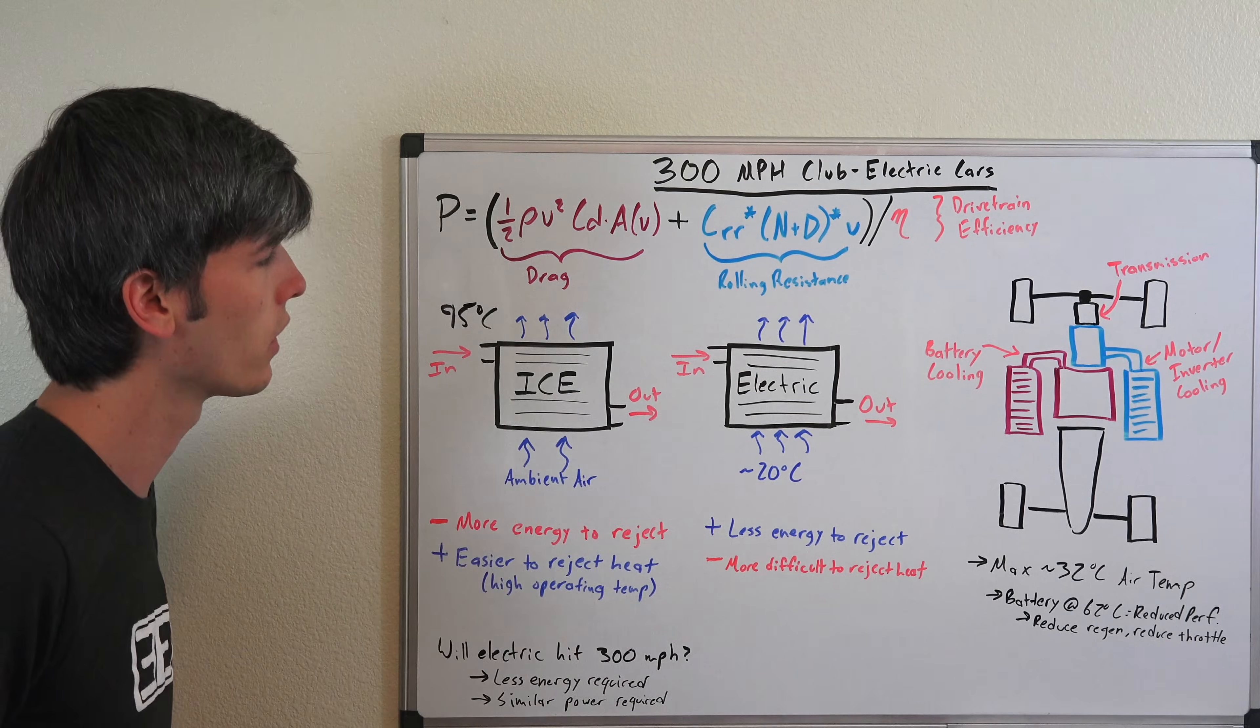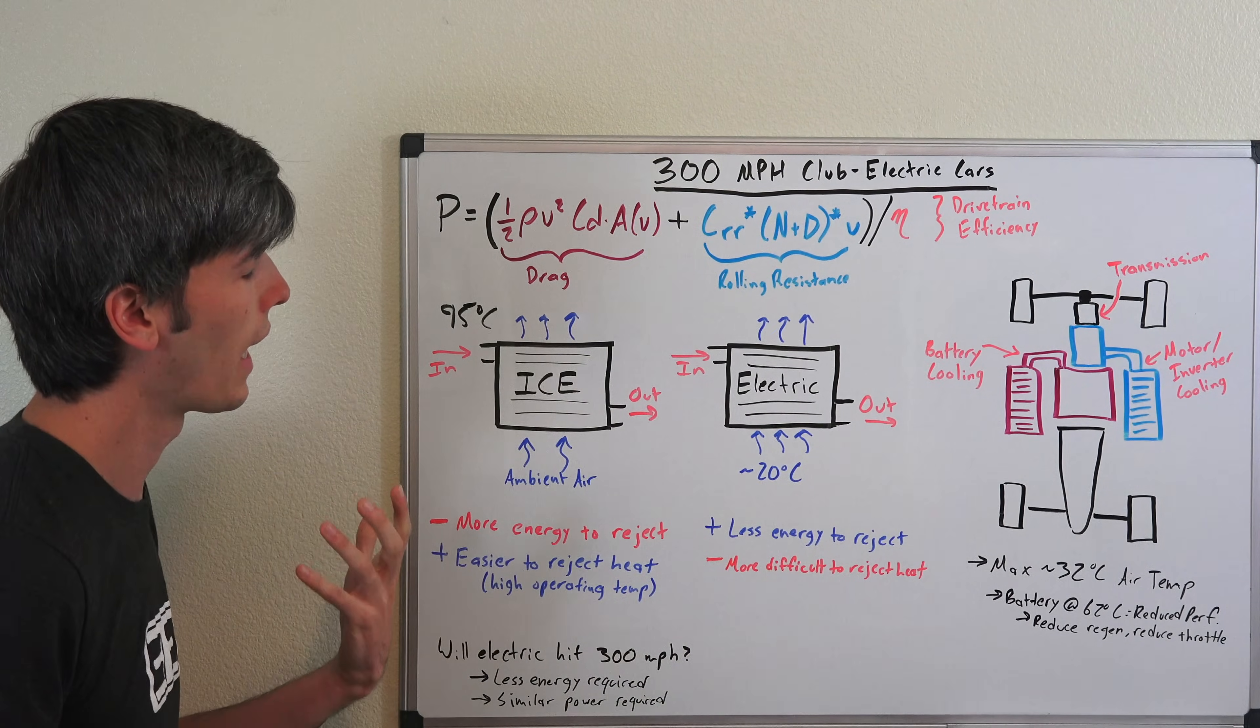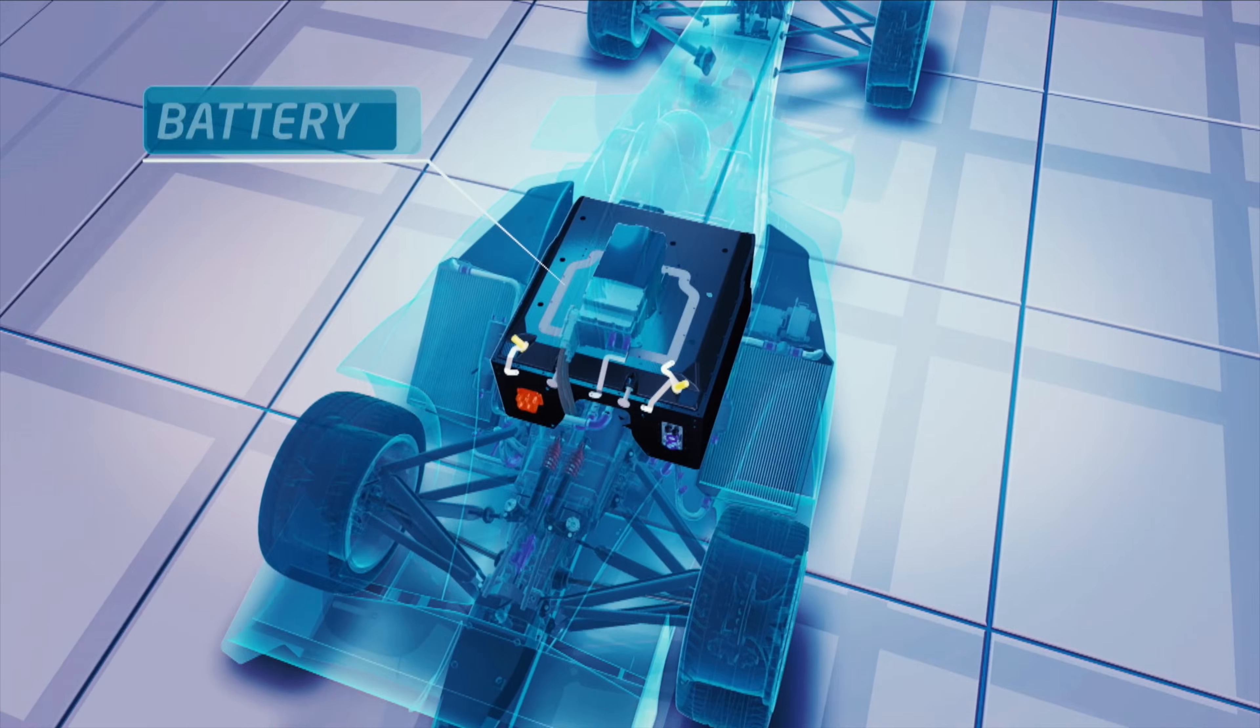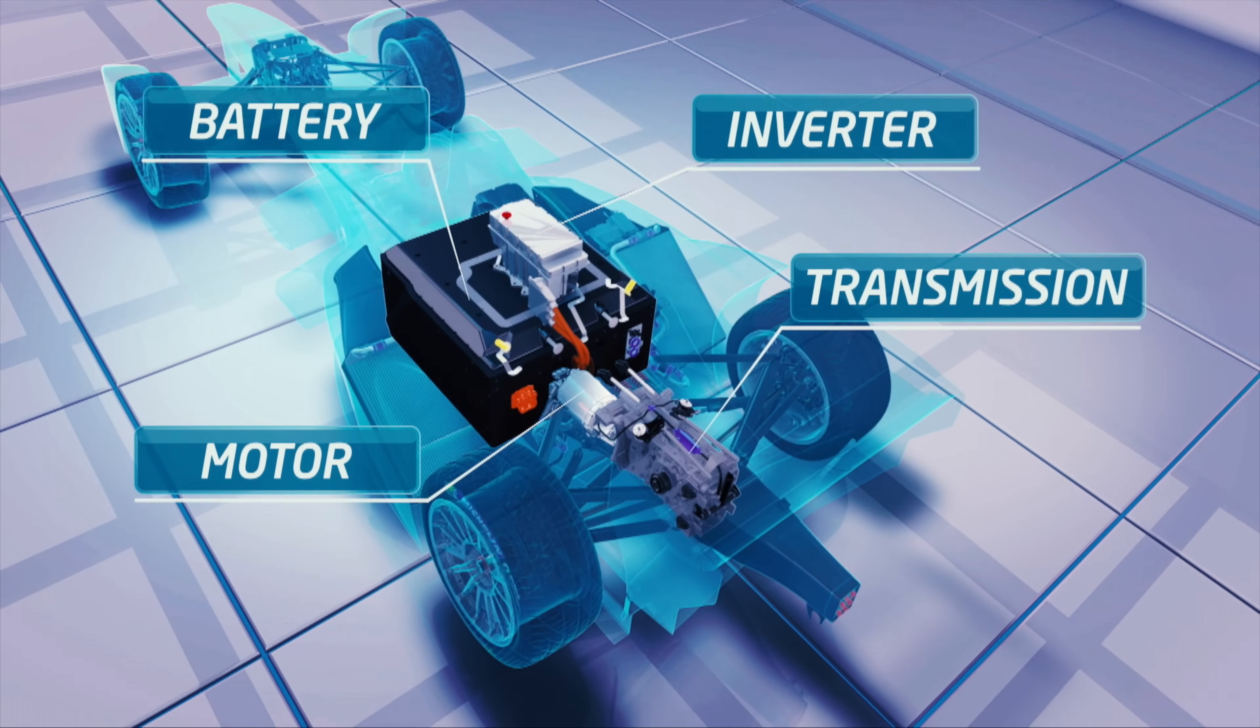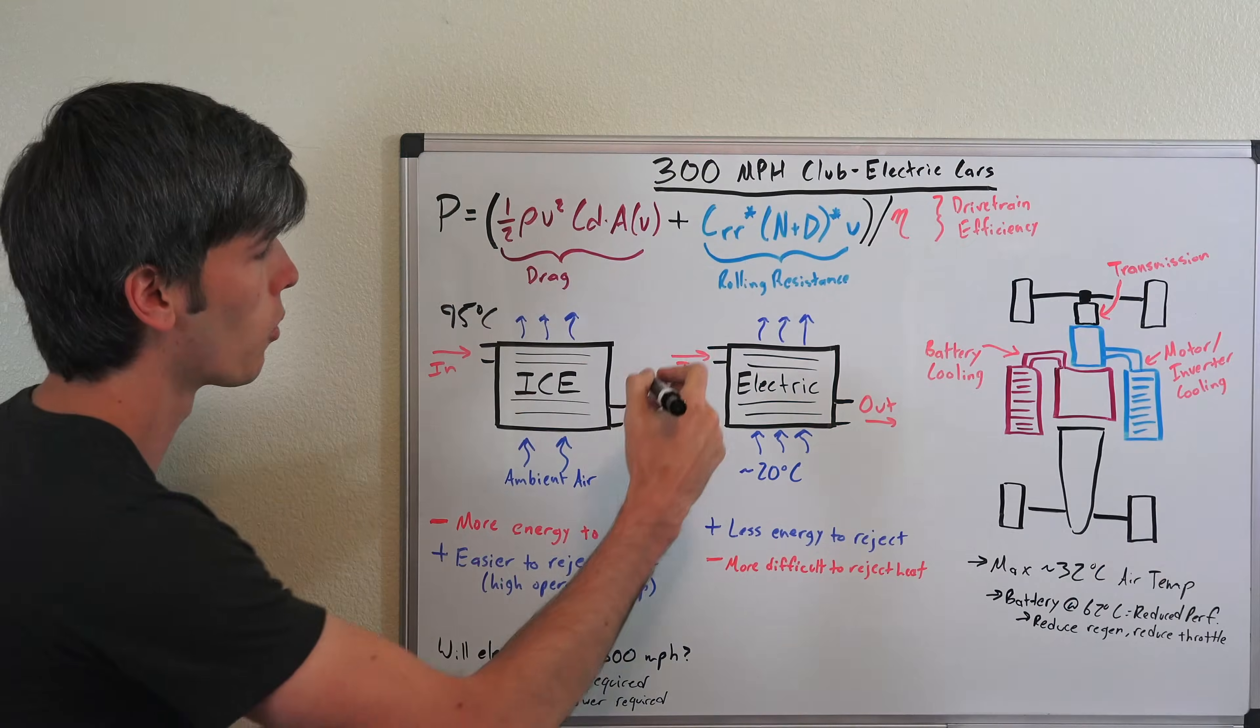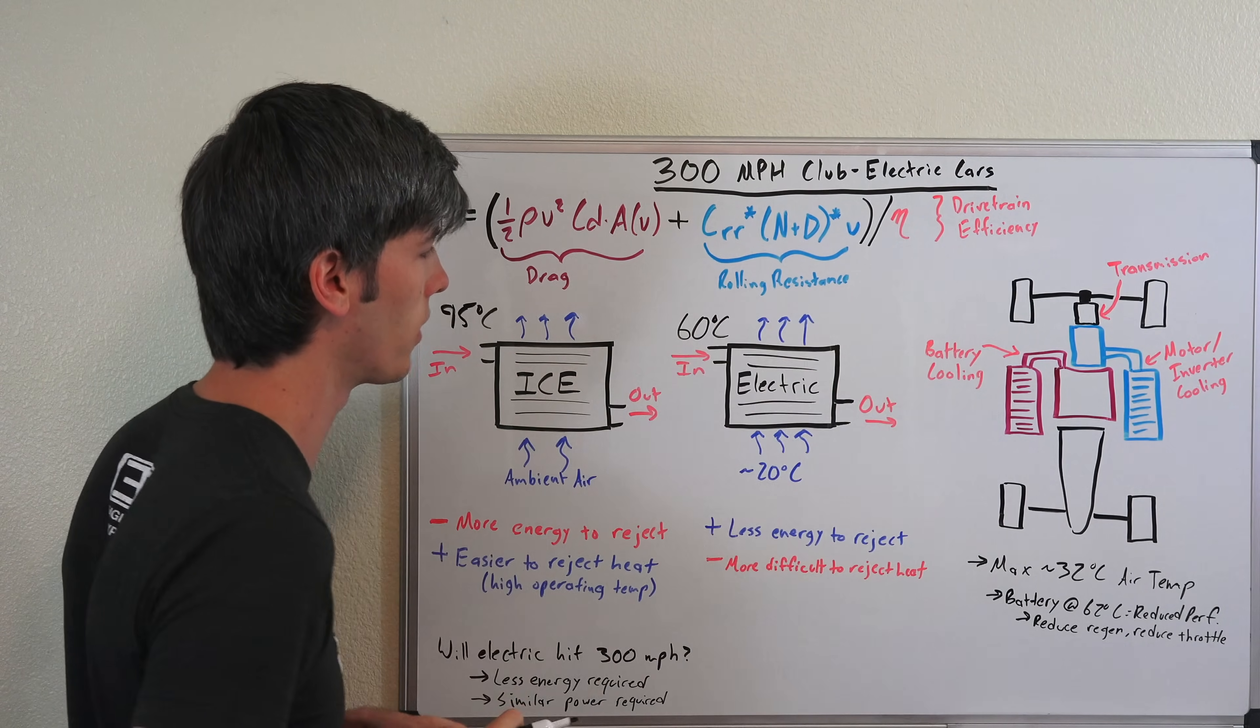Versus electric vehicles, I've actually worked on a cooling system for an electric vehicle and for some of the components they were allowed to get up to 60 degrees Celsius, for some of the other components they were allowed to get up to 65 degrees Celsius. In Formula E you really don't want your battery temperatures exceeding 62 degrees Celsius. So we're just going to say that our maximum coolant temperature here is about 60 degrees Celsius.